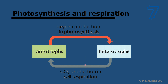Cell respiration requires oxygen, but the presence of oxygen is dependent on photosynthesis. Photosynthesis requires carbon dioxide, but the presence of carbon dioxide in the atmosphere relies on respiration — meaning respiration and photosynthesis are interdependent. Heterotrophs need the oxygen produced by autotrophs; autotrophs need the carbon dioxide produced by heterotrophs. Each provides the other with what it needs — this is a major interaction between autotrophs and heterotrophs.